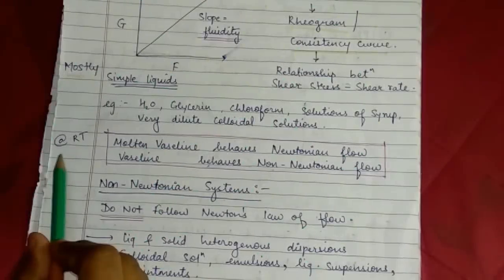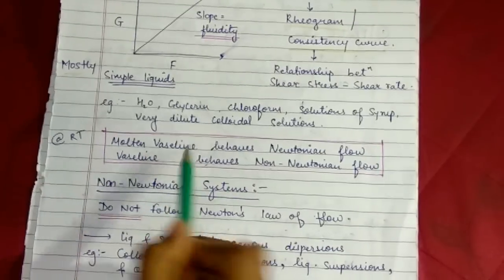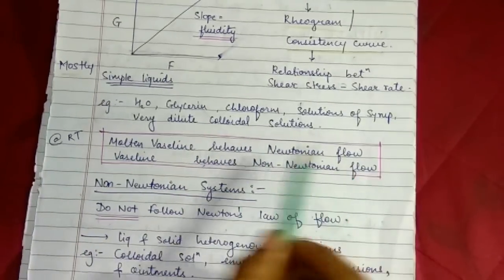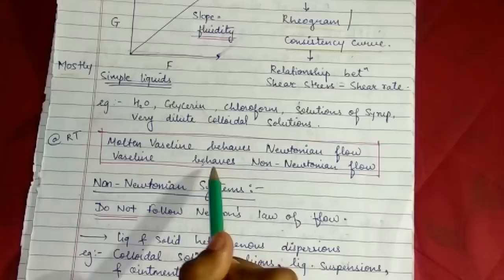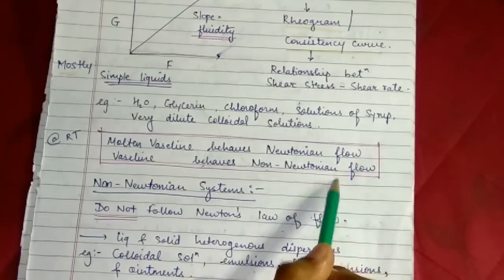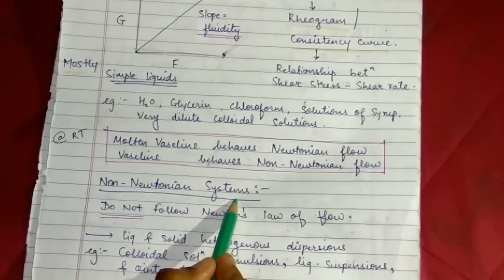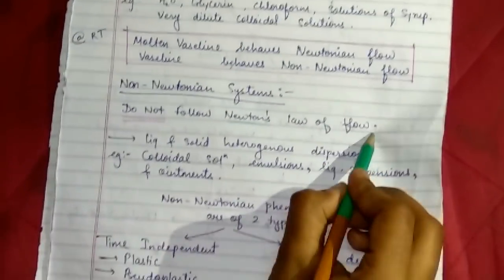At room temperature, molten Vaseline behaves Newtonian flow, and at room temperature, Vaseline behaves non-Newtonian flow. Non-Newtonian system does not follow Newton's law of flow.